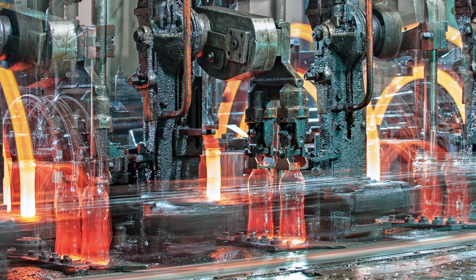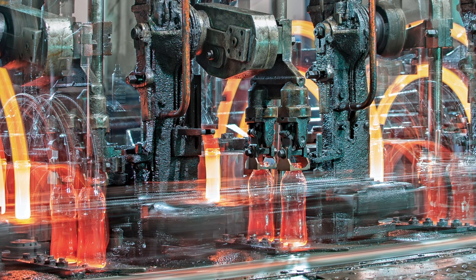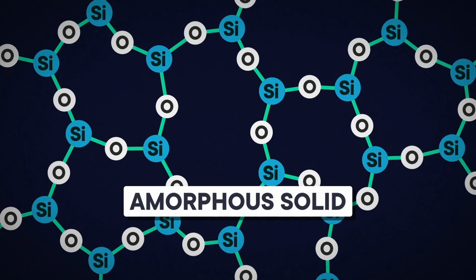When you superheat sand to make glass, and it becomes molten, glowy red, and drippy, it's a proper liquid, like liquid water. But as you cool it down, it doesn't necessarily return to its crystalline structure. Instead, it becomes an amorphous solid,